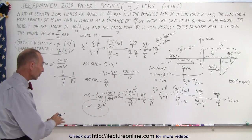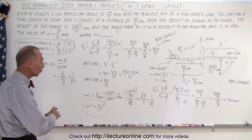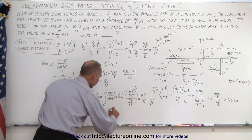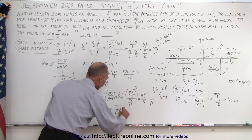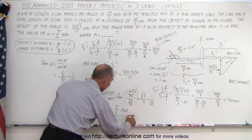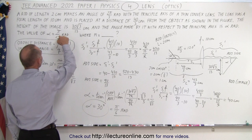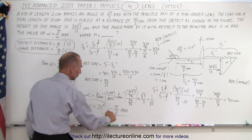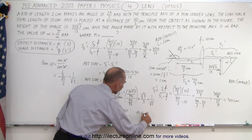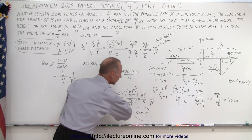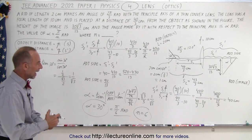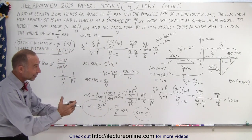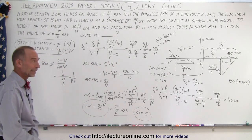Converting to radians, 30 degrees equals π/6 radians. Since the answer is supposed to be in the form π over n radians, we can say n is equal to 6. That is how we find the angle and the answer to this problem.